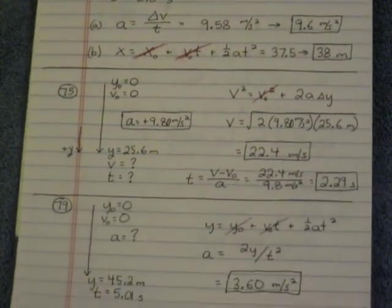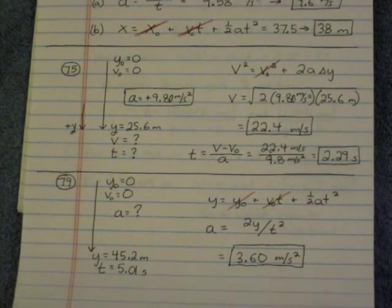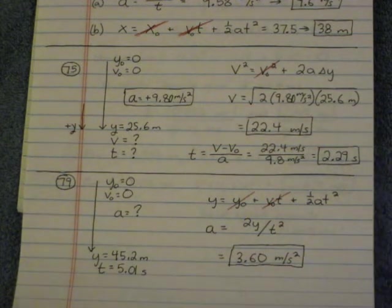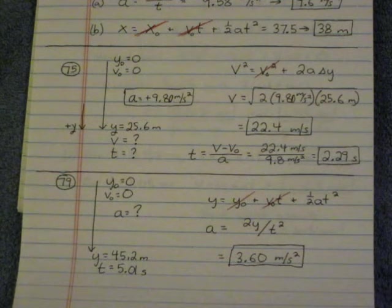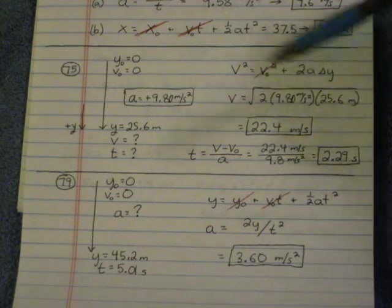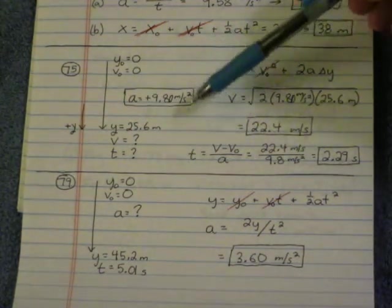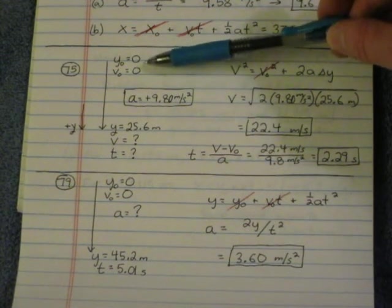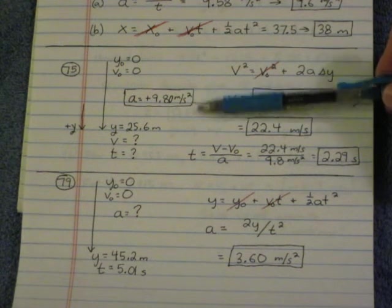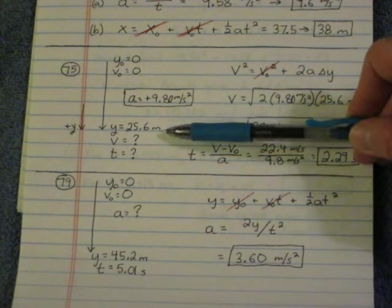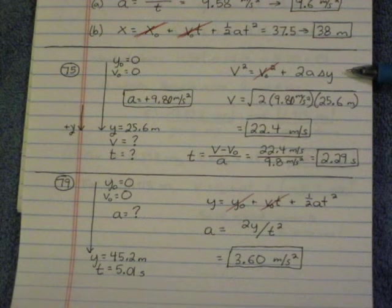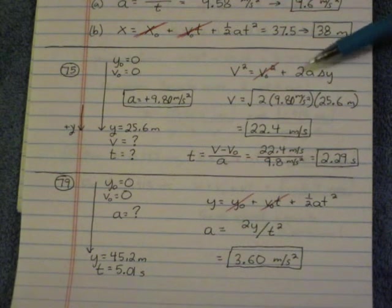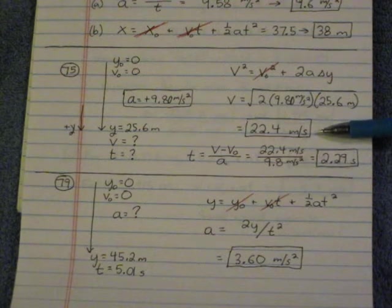Number 75 and 79 go nicely together. They both involve a free-fall drop. 75. Theme Park drops 25.6 meters straight down from rest. Find the time for the drop and the velocity at the bottom. Okay, notice the diagram that I've drawn. I've drawn my positive y-axis going down because the motion is downward. Y naught and V naught initially are 0. Acceleration is positive 9.80 because it's in the positive, the downward direction. Final Y is 25.6. We want to know velocity and time. So to solve for velocity, here's a good kinematic equation to use. Since you know acceleration and delta y, plug those in, and you get 22.4 meters per second.